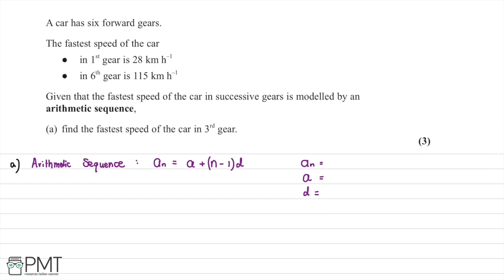In part A of this question, we're told that a car has six forward gears. The fastest speed of the car in first gear is 28 kilometers per hour and in sixth gear it's 115 kilometers per hour. Given that the fastest speed of the car in successive gears is modeled by an arithmetic sequence, we're asked to find the fastest speed of the car in third gear.